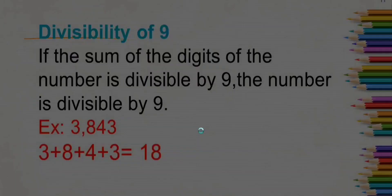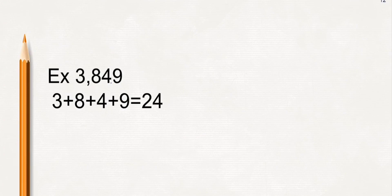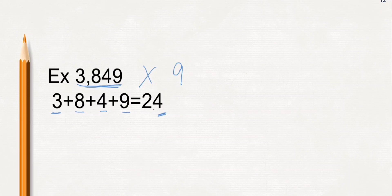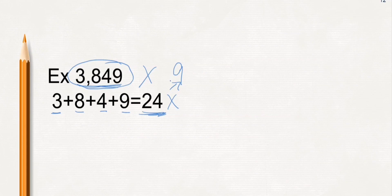Look at another example: 3849. If you split the digits, 3 plus 8 plus 4 plus 9 is 24. Is 24 divisible by 9? No — 9 times 3 is 27, 9 times 4 is 36 — so 24 is not divisible by 9. Therefore, 3,849 is not divisible by 9. If the digit sum is divisible by 9, the number is divisible by 9; otherwise, if the sum is not divisible by 9, the number is also not divisible by 9.